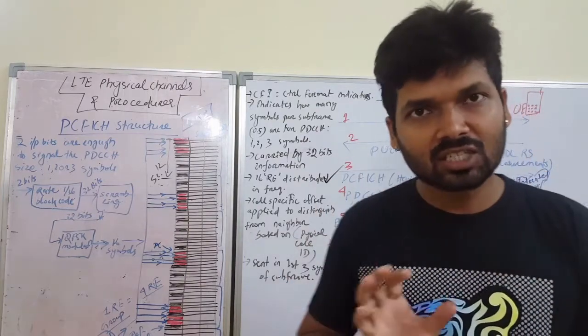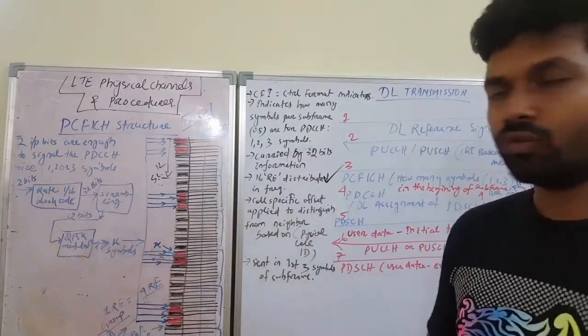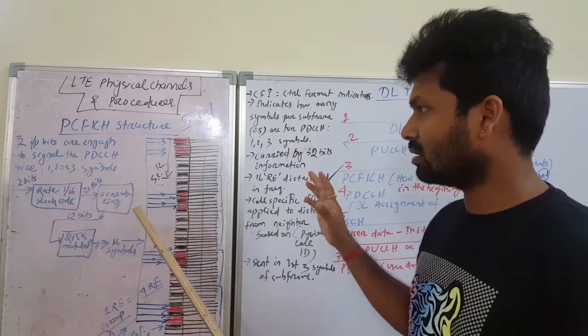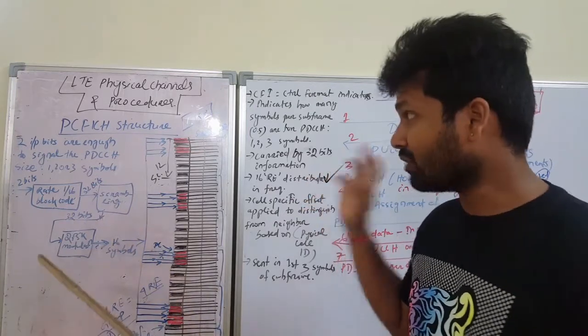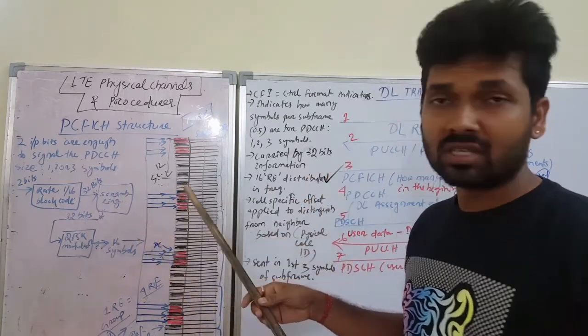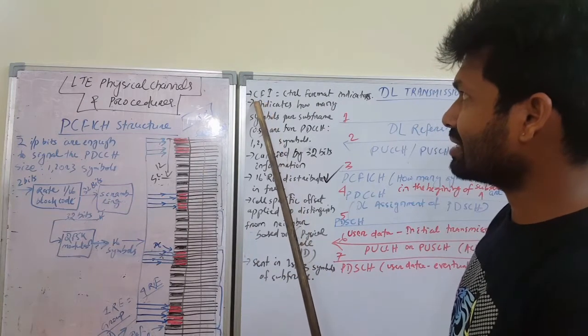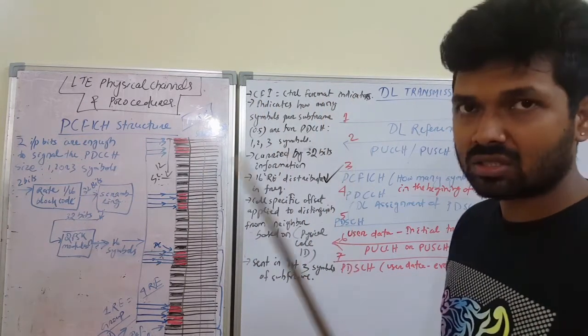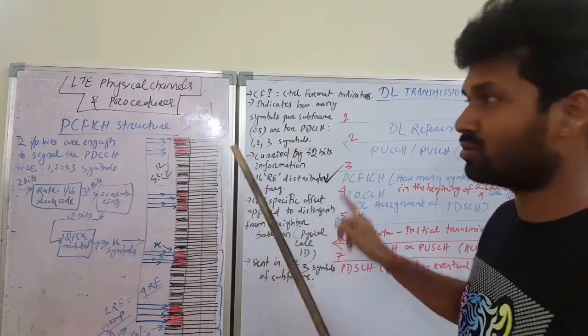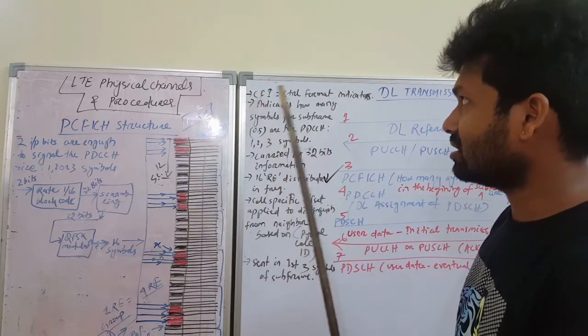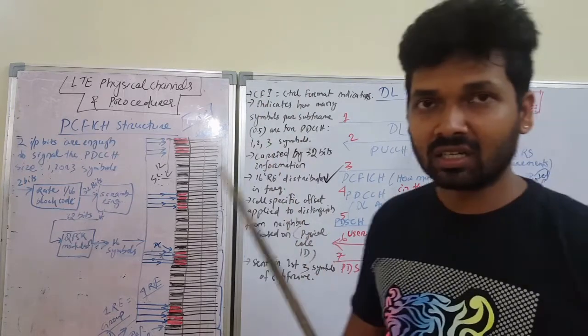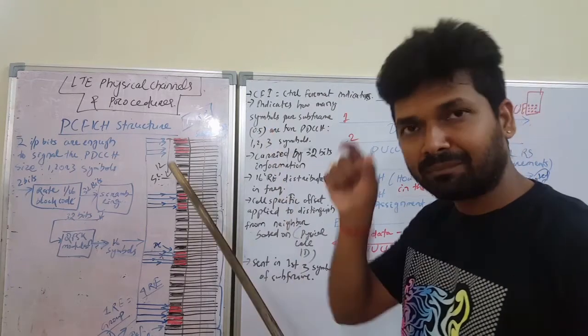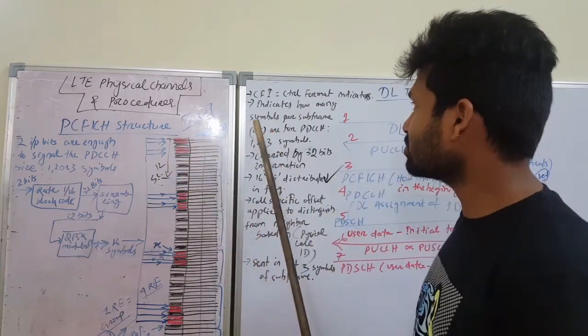the PCFICH formats used. Before we start the PCFICH structure, let's put some light on some facts about the PCFICH. First of all, we transmit CFI or the control format indicators in PCFICH transmission. We send CFI which indicates how many symbols per subframe - whether one, two, or three for PDCCH transmission.